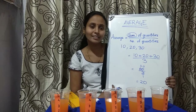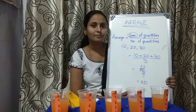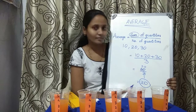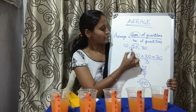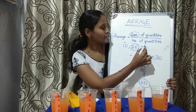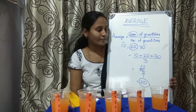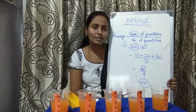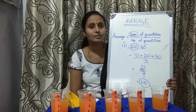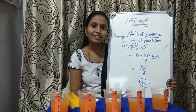So 20 is the average of the given set of values. If you observe, 20 is in between the smallest and the greatest values. Average always lies in between the smallest and greatest values. I hope you understood this. Thank you children.